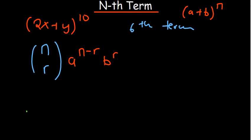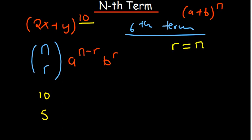Now, understanding that r is always less by 1: if we're asked to find the 6th term of something raised to the 10th power, our value of n is 10. Since it's the 6th term, r equals 6 minus 1, which gives us r = 5.